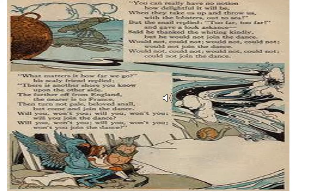The poem describes a conversation between a whiting and a sea snail. The whiting first asks the snail, who is in front of him, to move faster because a porpoise behind him is treading on its tail. He then invites the snail to join the Lobster Quadrille dance, which will involve getting thrown far out to sea. The snail refuses, saying he does not want to go so far away. The whiting tries to persuade the snail that there is nothing to fear because there is another shore on the other side of the sea — that is, if the snail is thrown far from England, he will be near to France. It is not revealed whether the snail ultimately chooses to take part in the dance or not.